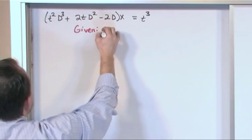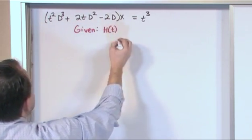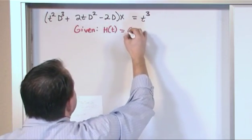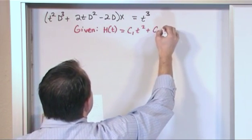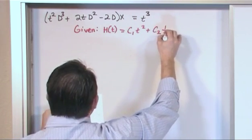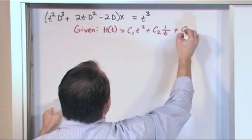we're also given that the solution to the related homogeneous equation is given to us. It's c1 t squared plus c2 times 1 over t plus c3. This is given to us.